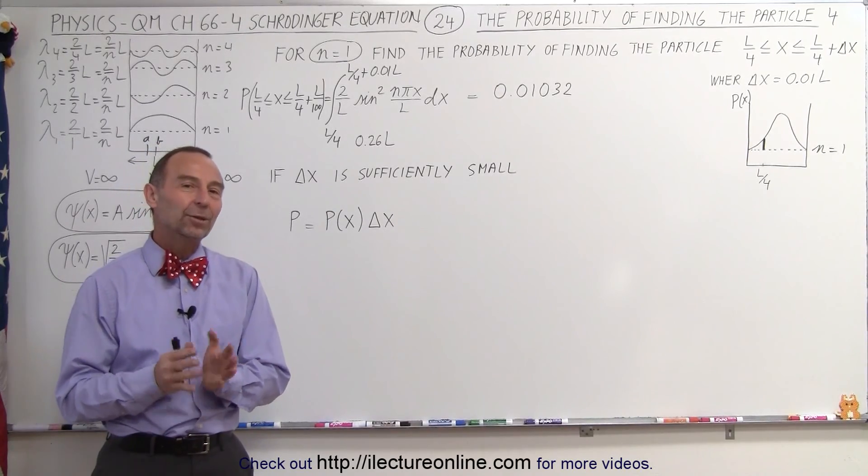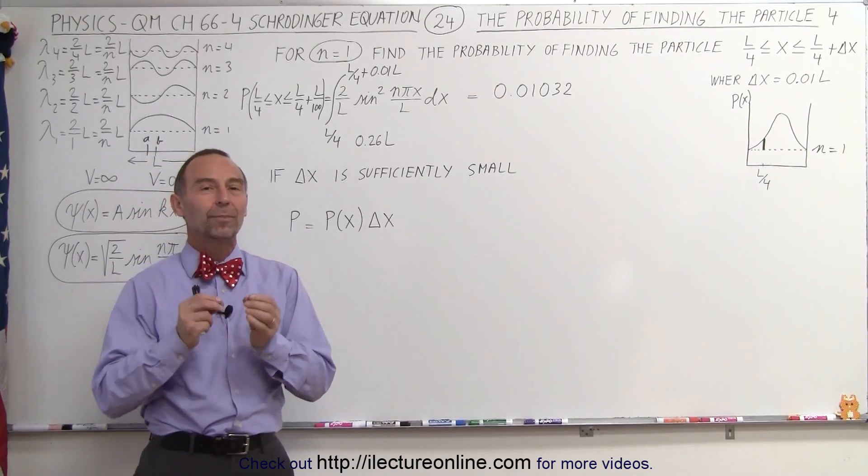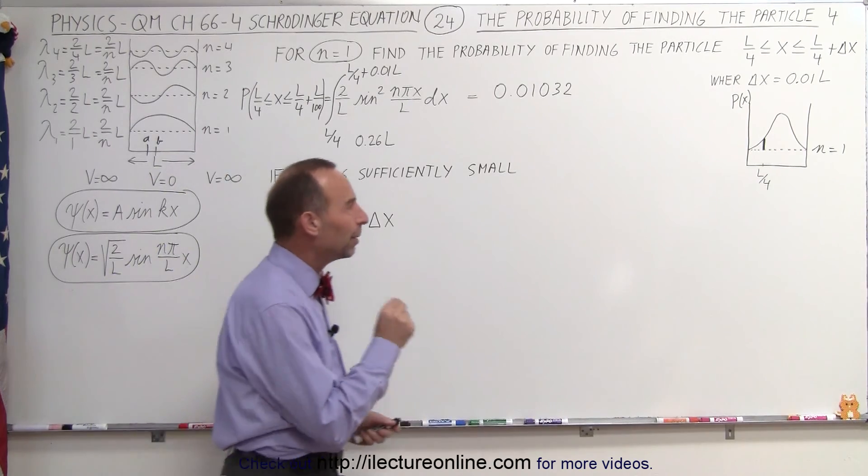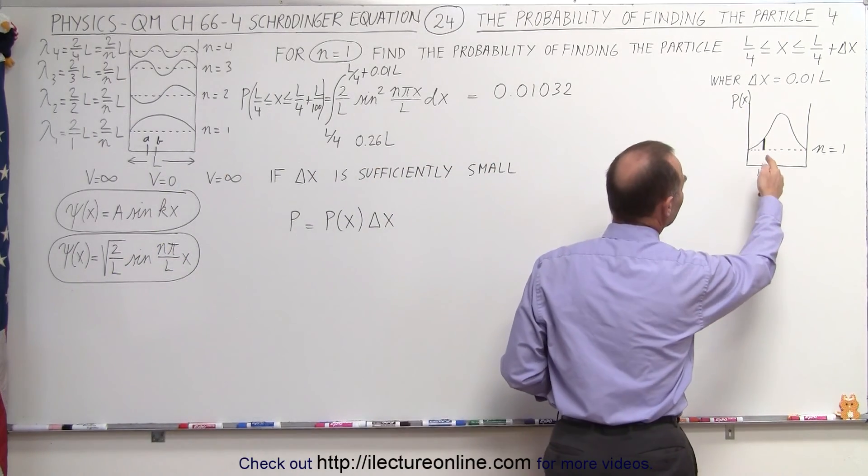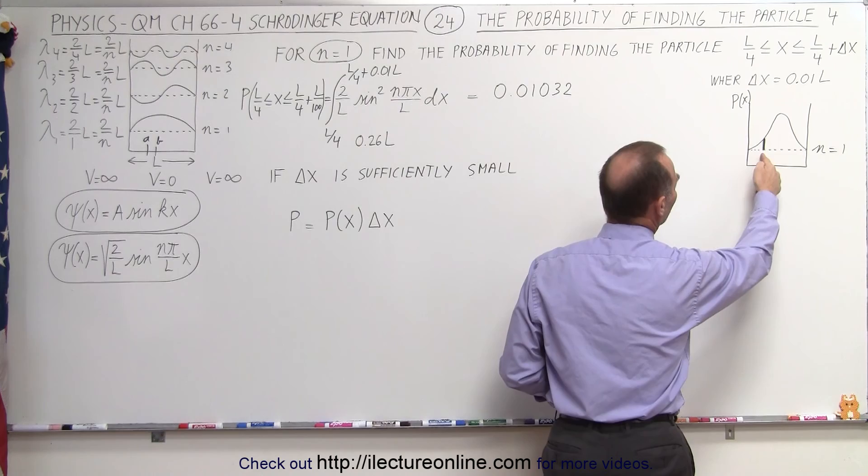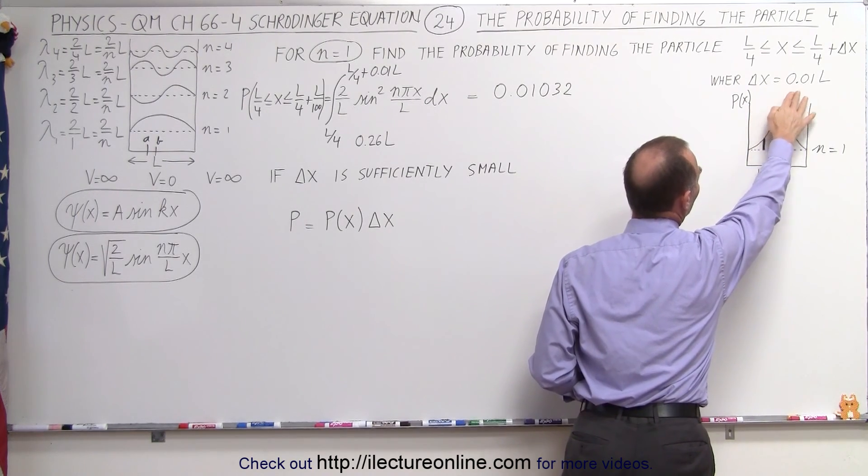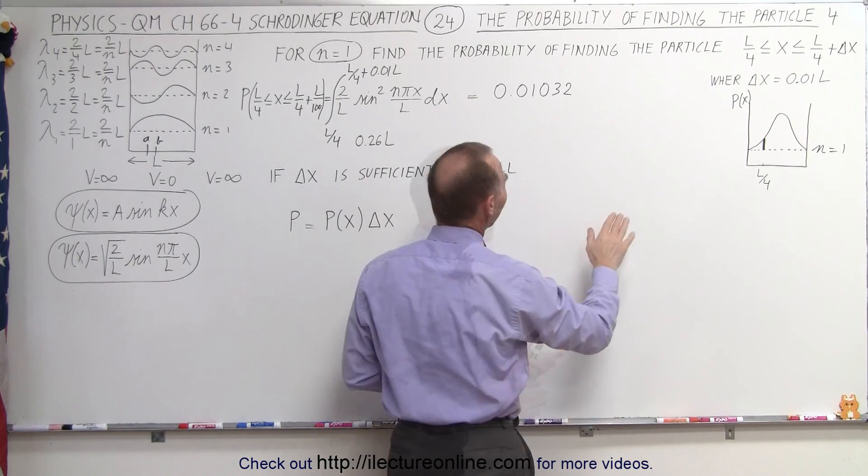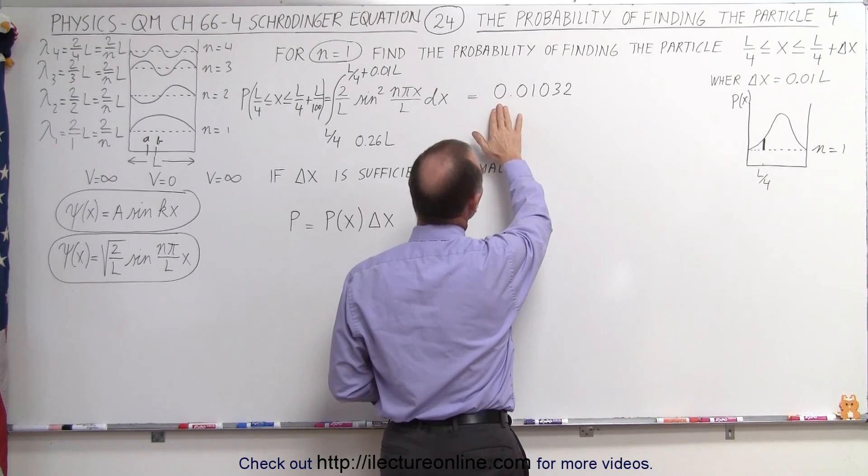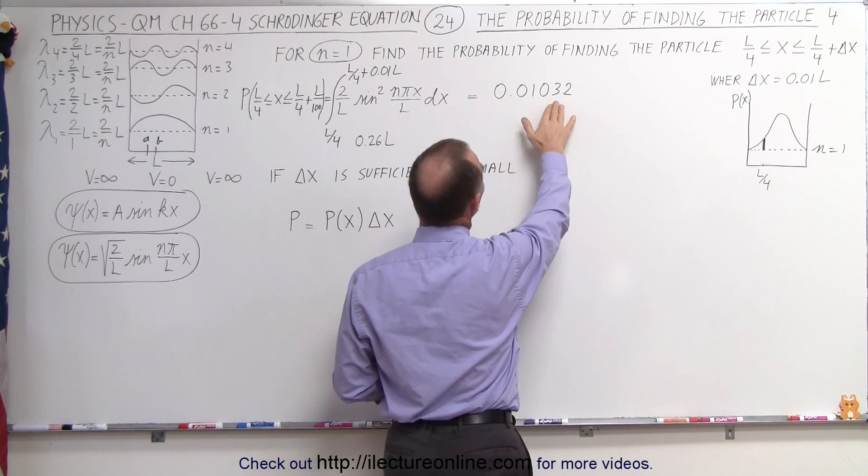Welcome to ElectronLine. In the previous video, we found the probability of finding the particle somewhere between L over 4 and L over 4 plus a small delta x. In this case, we made delta x to be 0.01L, and we found the answer to be 0.01032.